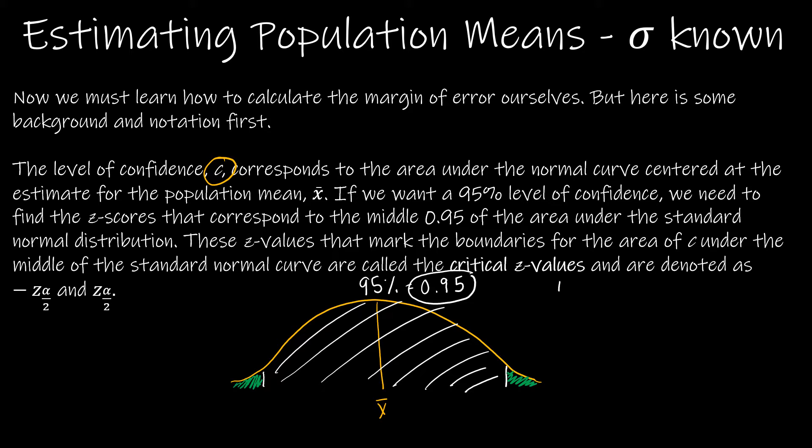We know the whole thing is equal to 1. So if I take 1 minus 0.95, I get 0.05. So 100% minus 95% is 5%, which means the total area that I've shaded green on the tails is 5%.